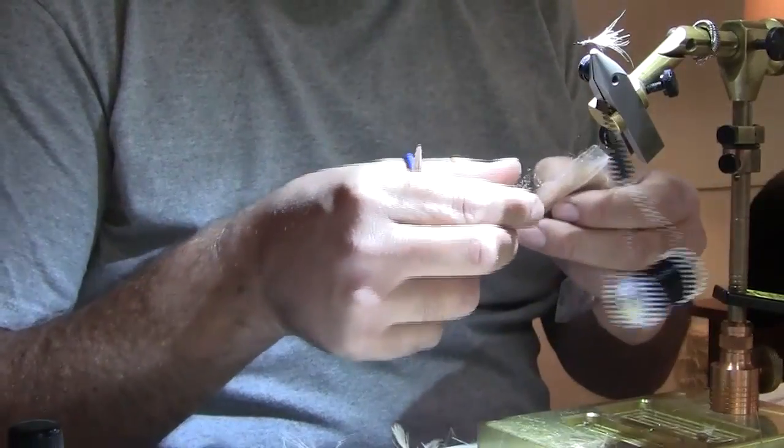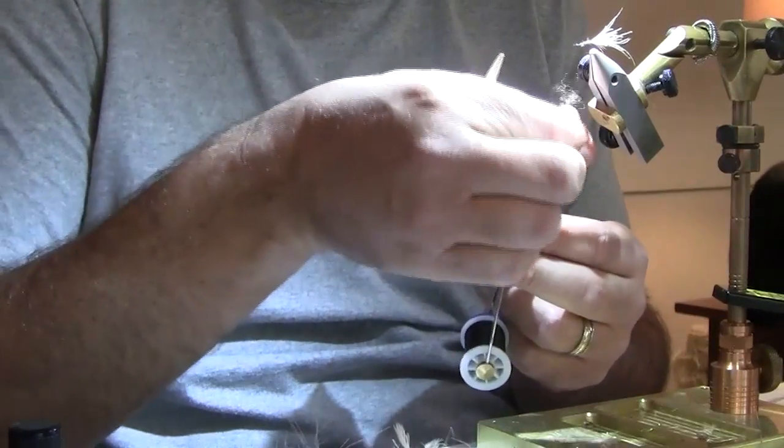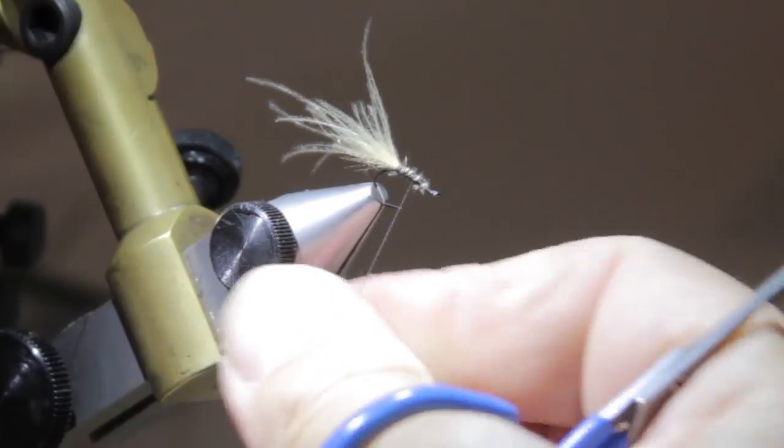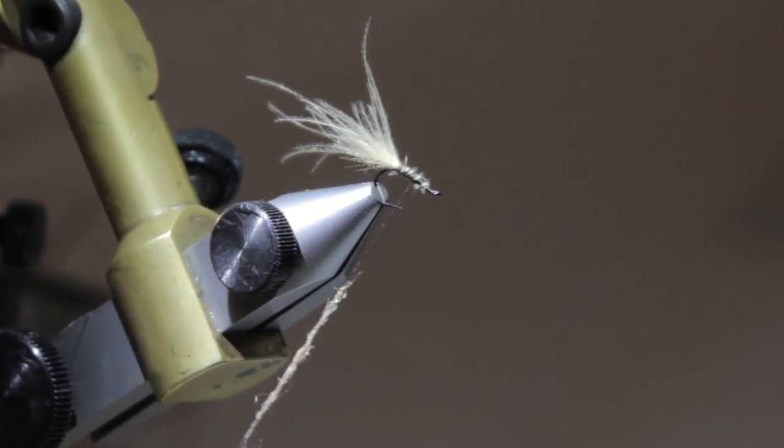Next we'll dub a little bit of STS trilobal. This is a very coarse dubbing so just use a light amount. And you could change your thread color to brown too. I'm using black.